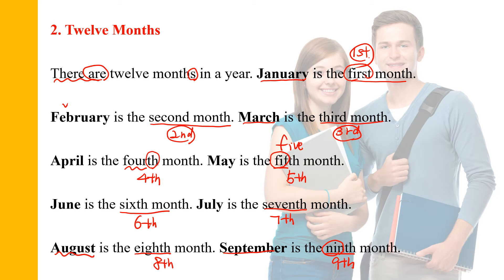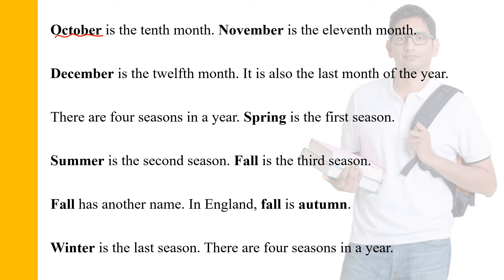Let us read the story one more time. There are 12 months in a year. January is the first month. February is the second month. March is the third month. April is the fourth month. May is the fifth month. June is the sixth month. July is the seventh month. August is the eighth month. September is the ninth month. Now we have October, the tenth month.